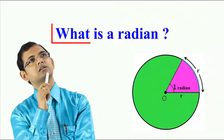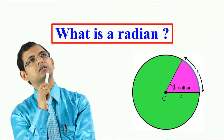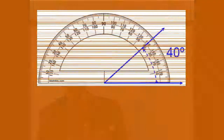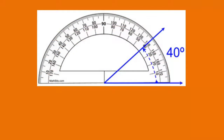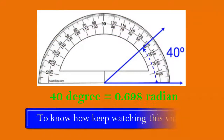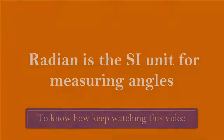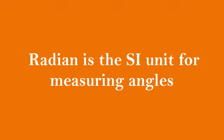In this video, you will know what is radian. Radian is an angle unit used to measure an angle, just like degree. Radian is the SI unit to measure the amount of rotation,